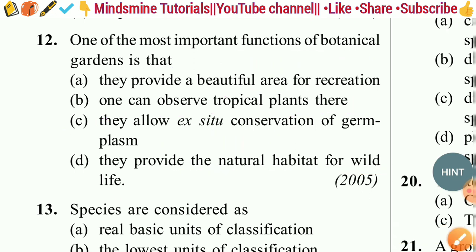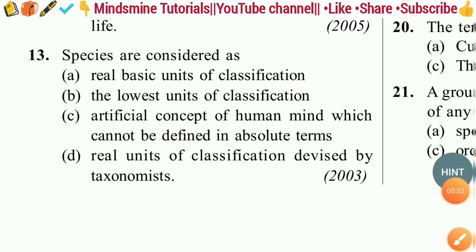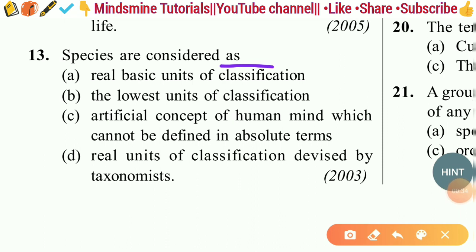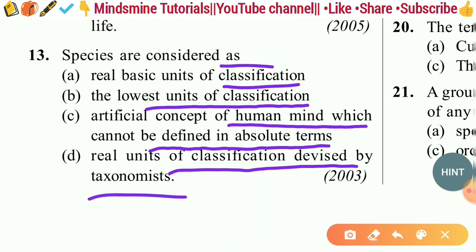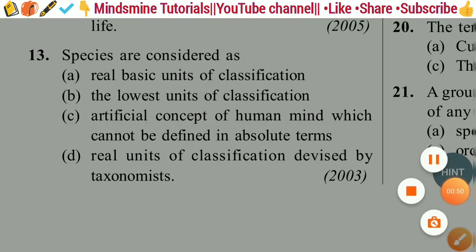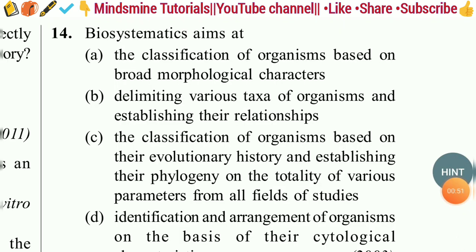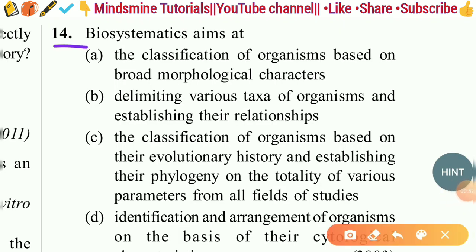Question thirteen: Species are considered as — real basic units of classification; lowest units of classification; artificial concept of human mind which cannot be defined in absolute terms; or real units devised by the taxonomist. The right answer is option A — real basic units of classification.